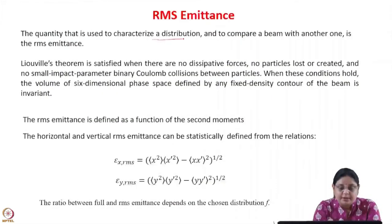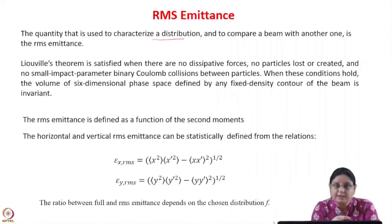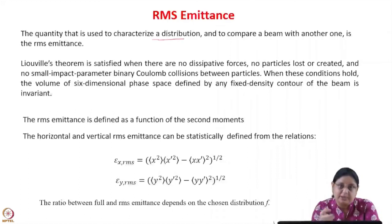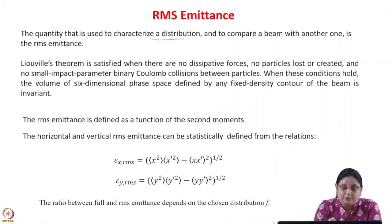A quantity used to characterize a distribution and compare one beam with another is known as the RMS emittance. We have studied so far the total emittance, which is the area of the outermost ellipse divided by pi, then 50 percent, 90 percent, or 99 percent emittance. Now we will define an RMS emittance.